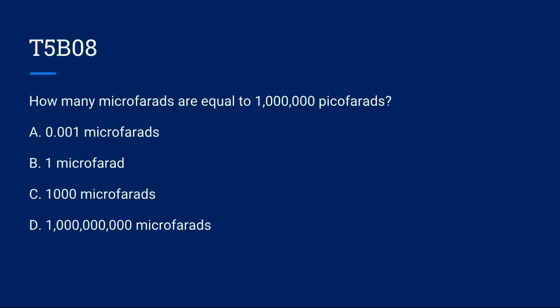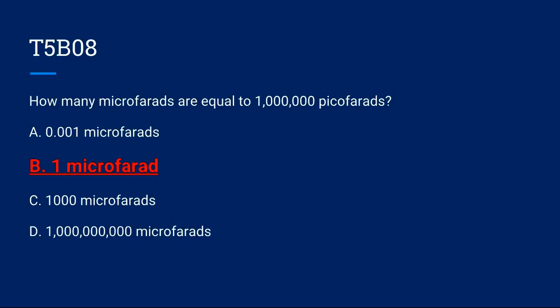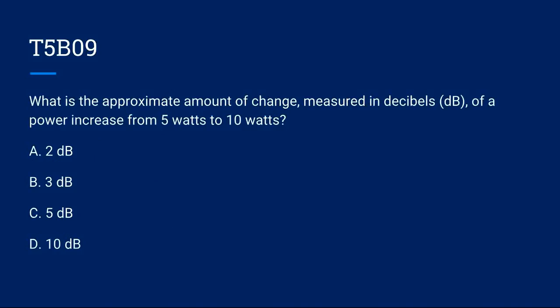T5B08, how many microfarads are equal to 1,000,000 picofarads? A. 0.001 microfarads. B. 1 microfarad. C. 1,000 microfarads. Or D. 1,000,000 microfarads. The correct answer is B. 1 microfarad. T5B09, what is the approximate amount of change measured in decibels of a power increase of 5 watts to 10 watts? A. 2 decibel. B. 3 decibel. C. 5 decibel. Or D. 10 decibel. The correct answer is B. 3 decibel gain.